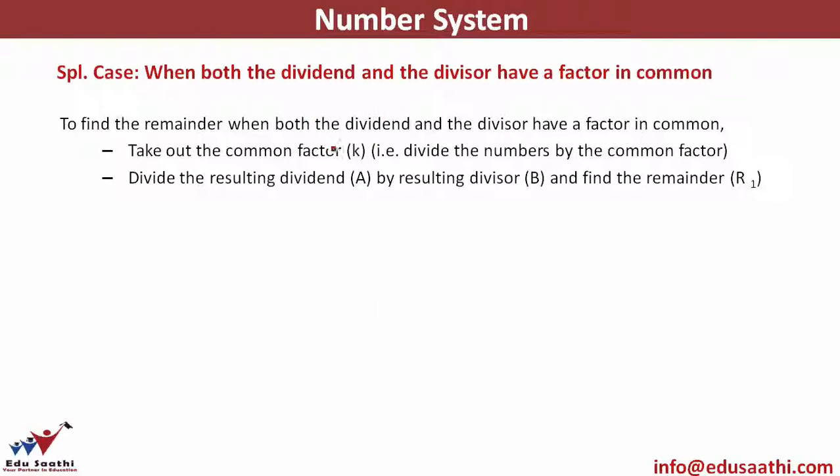Find the remainder using the resulting dividend and divisor. Your dividend and divisor would be reduced by the factor K which you have taken out. Divide the resulting dividend by the resulting divisor to find the remainder. The actual final remainder is the remainder you get multiplied by the common factor.